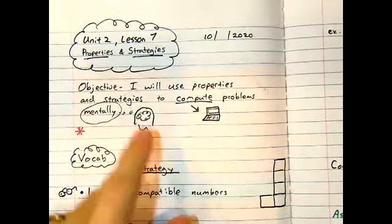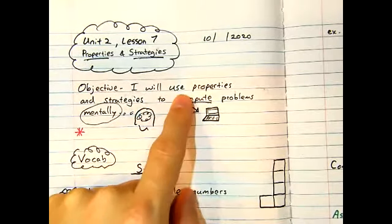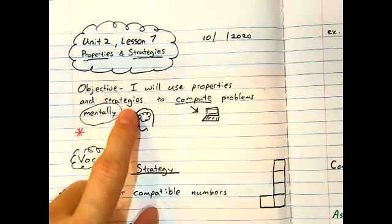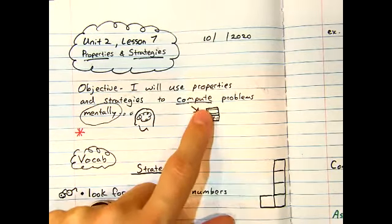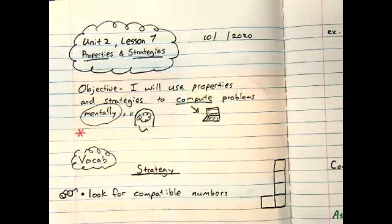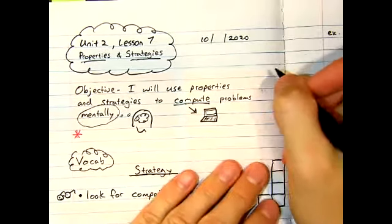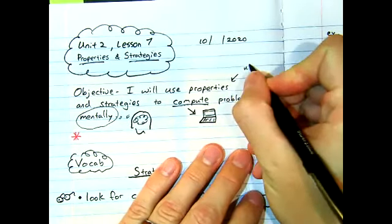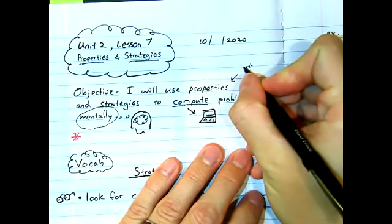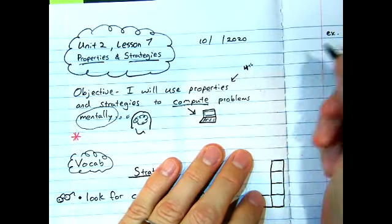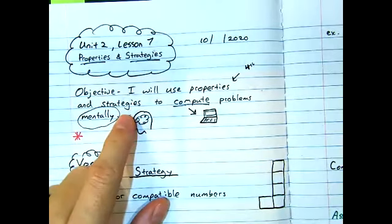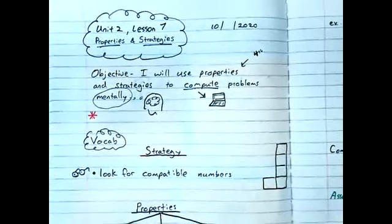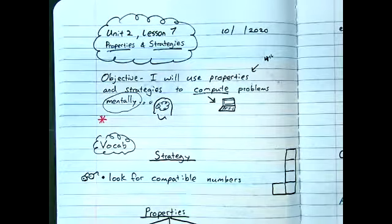Alright, one more time with the objective, read it with me. I will use properties and strategies to compute problems mentally. Alright, and properties. I'm certain your fourth grade teacher talked to you about properties of addition, subtraction, multiplication. As far as strategies, this is just methods. Alright, and let's look at our first vocab term of strategy.